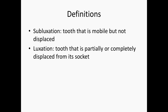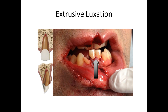The different types of luxations are described as follows. An extrusive luxation is when the tooth appears elongated and is mobile. The treatment is to reposition the tooth by gently reinserting it into the socket, then stabilize the tooth using a flexible splint. At the end of the video I will go over in some detail how to apply a flexible splint and what the options are in the emergency department.